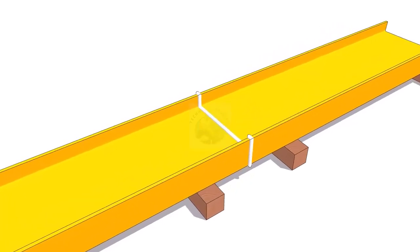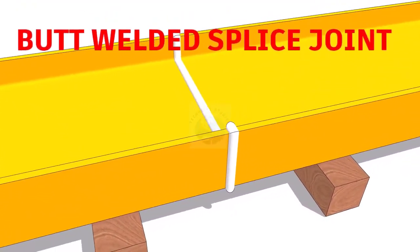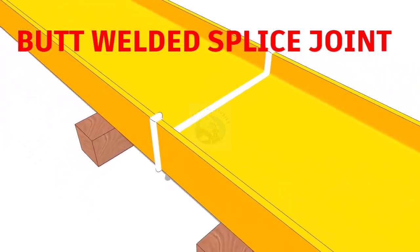There are many methods to joint two or more columns or beams together. Some of the common types of splice joints are: